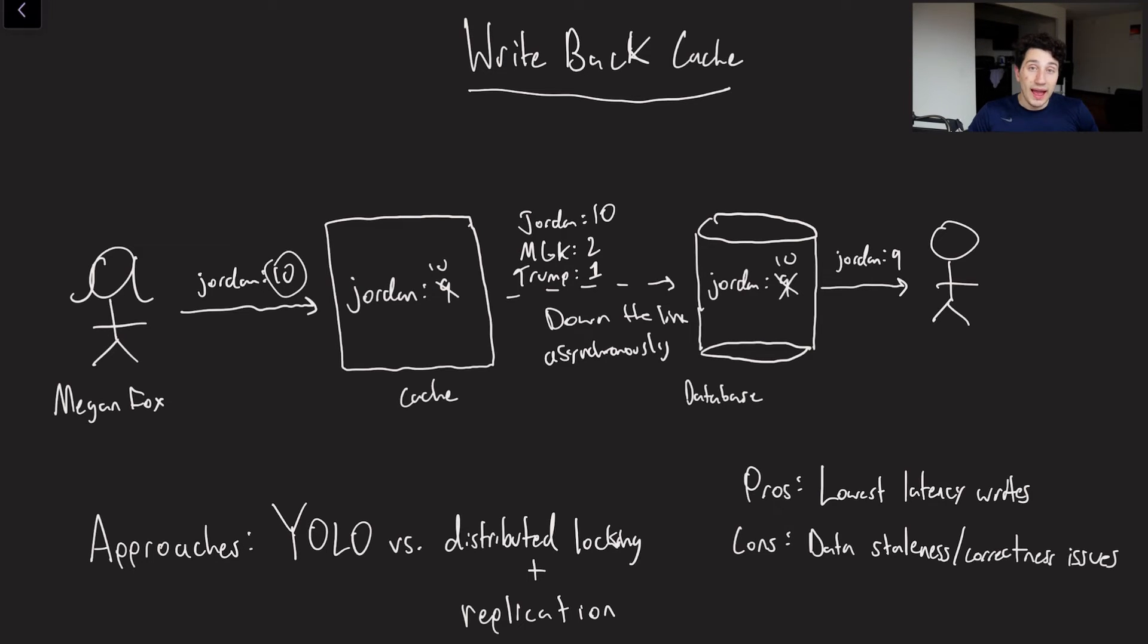One thing that a certain lot of write-back cache setups like to do is lower the amount of load on the database by mini-batching the writes that they've taken on that haven't yet gone to the database. So for example, let's say Megan also decided that besides me being a 10, Machine Gun Kelly, her current boyfriend, is a 2 because I'm more attractive, and Donald Trump is a 1. That's obvious. So it's possible that we would effectively mini-batch these writes and send them all to the database at once. It's a lot more efficient than having to send many different things over the network. It just makes life easy.